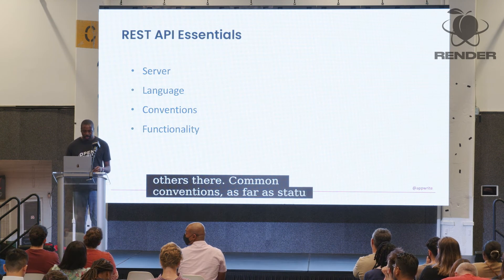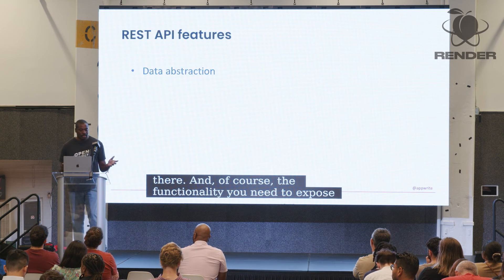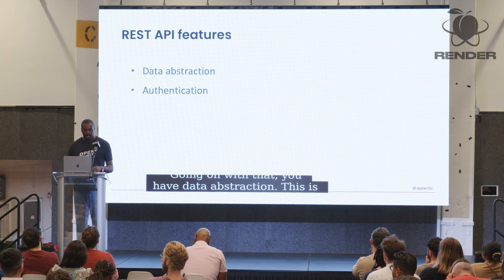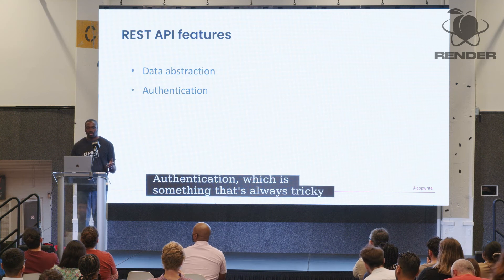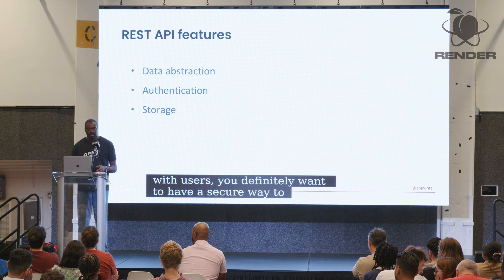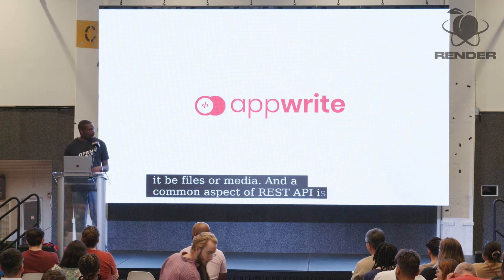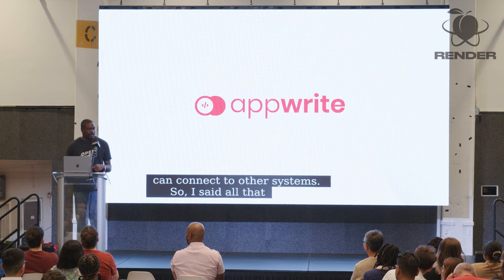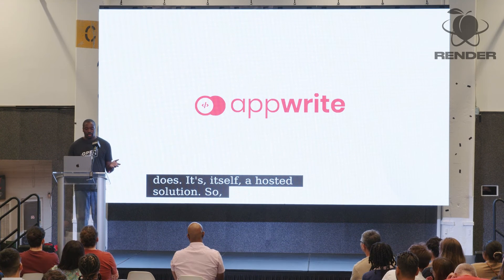You need to expose the information from your database through the REST API. There's data abstraction — most commonly JSON — exposed to the client. Authentication is something that's always tricky to get right, but is essential for securely identifying users. There's also storage for files or media. And a common aspect of REST APIs is the ability to connect to other systems.